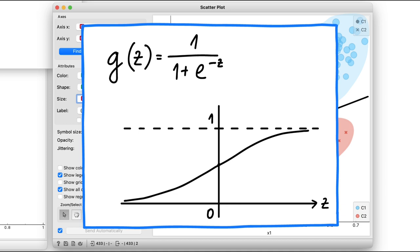When z is large, the output y, that is the probability of c1, approaches 1. And when the value of z is large but negative, the output y approaches 0.